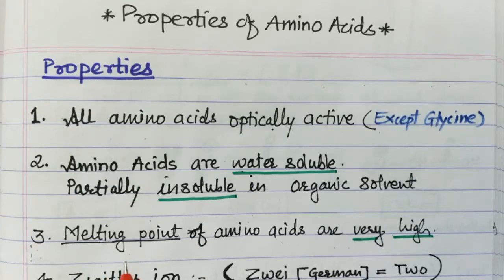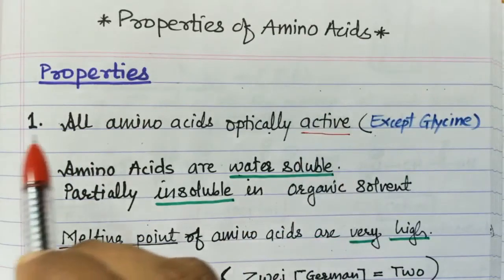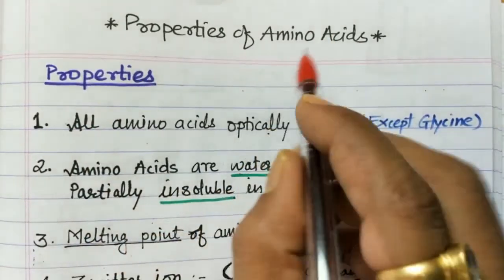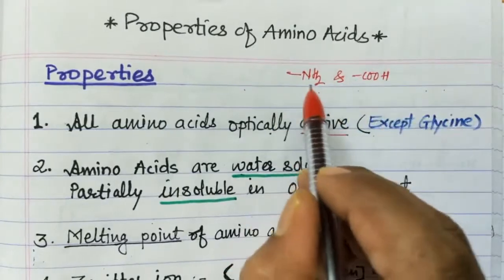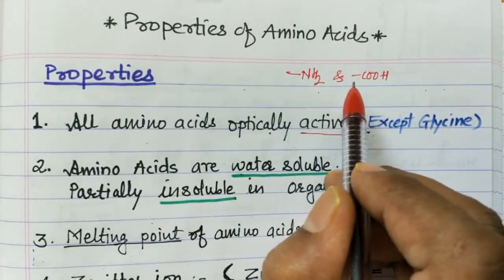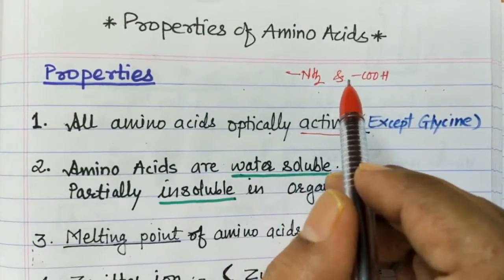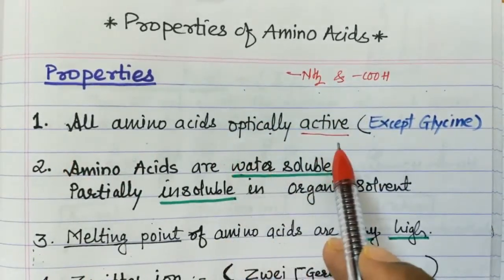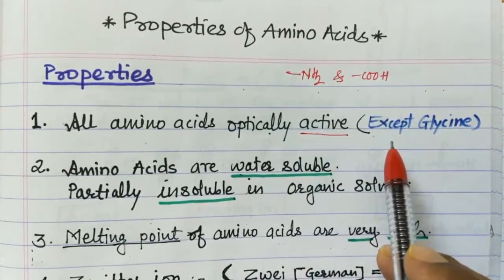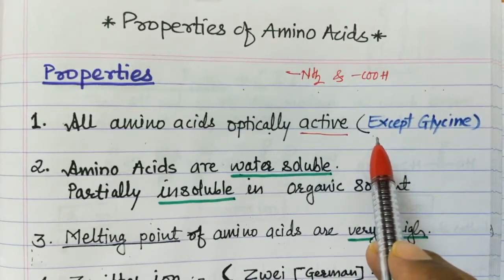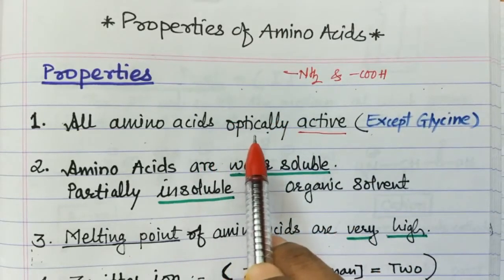Let's start today's topic: properties of amino acids. As amino acids consist of both amino and acid groups, they can show the properties of both amines as well as carboxylic acids, but some properties are somewhat different. First property: all amino acids are optically active except glycine, because glycine does not have a chiral center, as we have already seen in the classification video.